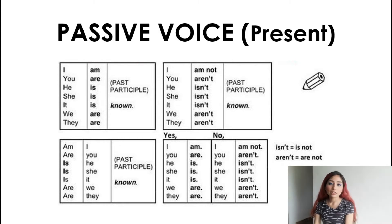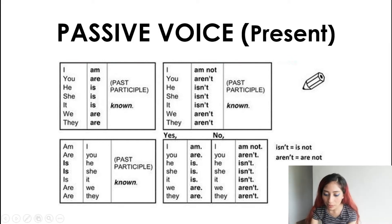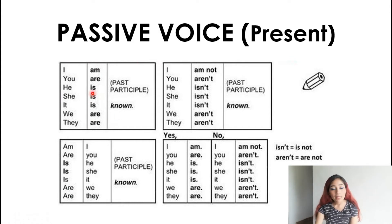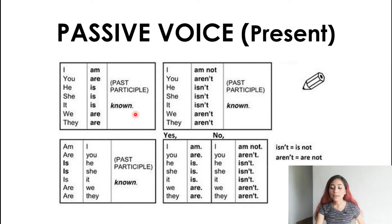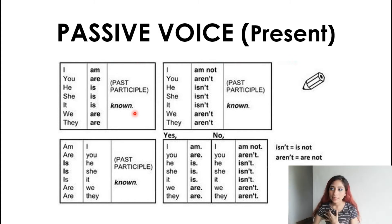Now, passive voice. We always start the sentence with the subject. We can have lots of different subjects. Next to the subject we are going to add the verb 'to be' in the present — because this is present passive voice in present. Pay attention: it is in present this time. Then next to the verb 'to be' in present comes the past participle verb, for example: beaten, danced, written.